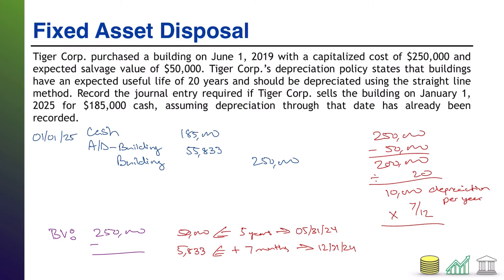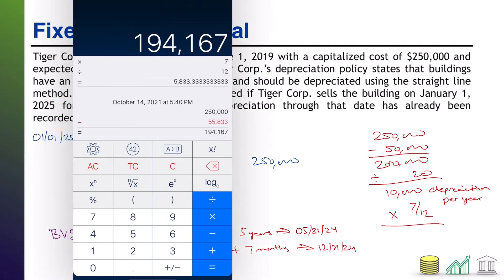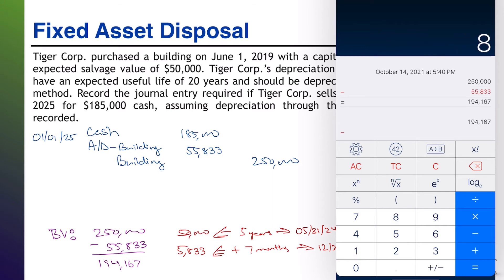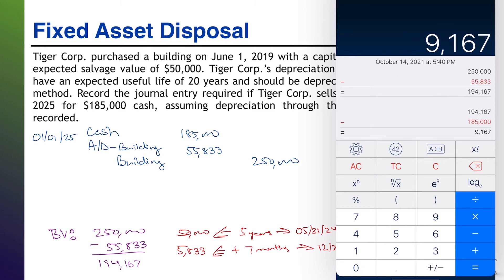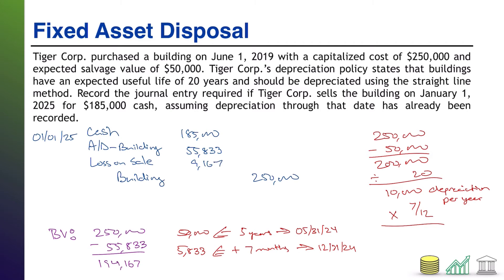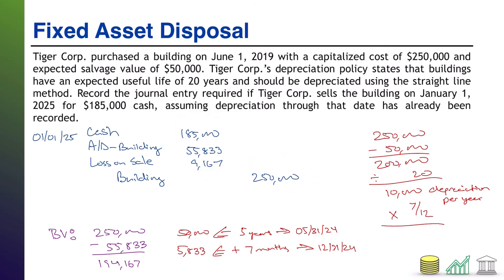That $55,833 comes out of the account — that's what we debit in our journal entry. Moving on to book value: $250,000 minus $55,833 equals $194,167. We compare that to the cash received — only $185,000 — so we received less than book value, resulting in a loss of $9,167. We record that as a debit since a loss is basically an expense. Loss on sale, $9,167. Tally up your debits and they should equal the $250,000 credit. Done.